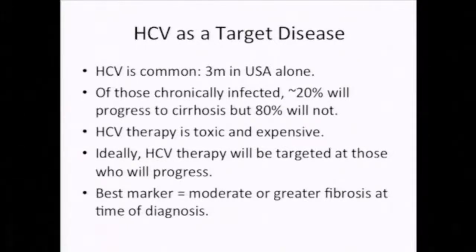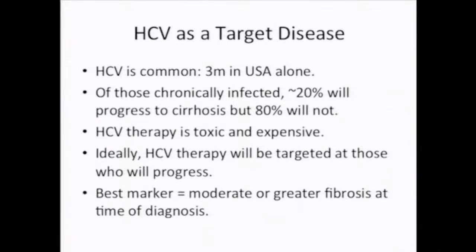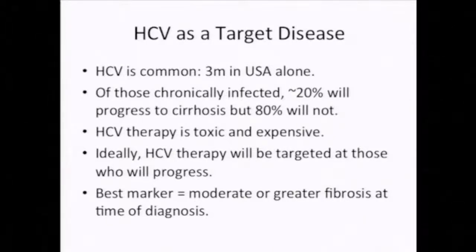About 20% of people infected with hepatitis C will ultimately develop cirrhosis — which means 80% won't. If you were to treat everybody with interferon, you'd be treating 80% of people who don't need to be treated. The challenge in hepatologic practice is to identify the 20% who need treatment. At the moment that's done using liver biopsy — looking for moderate or greater fibrosis at the time of diagnosis, which indicates likely progression to cirrhosis over the patient's lifetime.